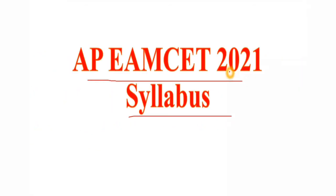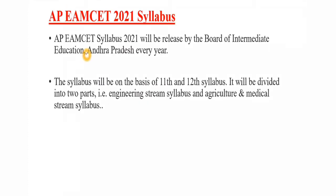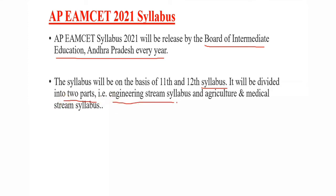So let's check out the AP EMSet 2021 syllabus. The AP EMSet 2021 is called the Board of Intermediate Education. We have a major syllabus based on the 11th and 12th syllabus. We have two types of parts: engineering stream syllabus, and agriculture and medical stream syllabus.